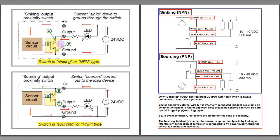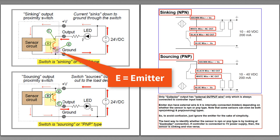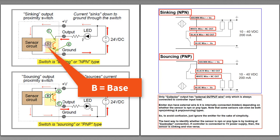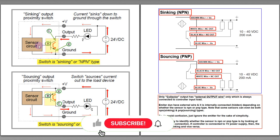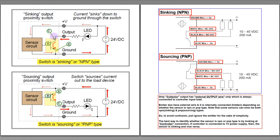For the bipolar junction transistor, it basically consists of three things: first is E, which stands for emitter; the other is B, which stands for base; and C, which stands for collector. B is always internally connected to the sensor or switch, and C is always internally connected to the output wiring. These two things we have to remember to avoid any confusion.